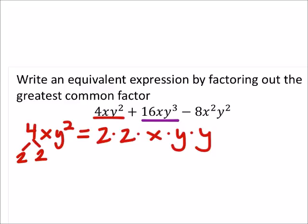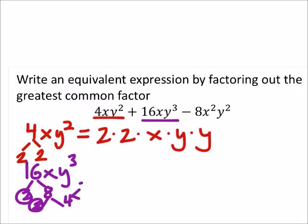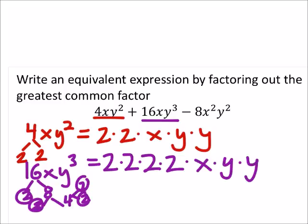So the next one is the 16xy cubed. 16 would split up into 8 and 2. And then 8 splits up into 2 and 4, which splits up into 2 and 2. That's the prime factorization of 16, is 2 times 2 times 2 times 2. I had 4, 2s circled there. I've got an x. I've also got 3 y's as well.